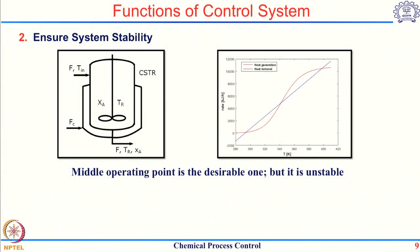An example of such a system is an exothermic CSTR, which you might have studied in your reaction engineering course. In order to maintain the temperature inside the reactor, you have to have some sort of cooling mechanism. If you look at the heat generated inside the reactor, you get a sigmoidal curve as a function of reactor temperature. But if you look at how heat gets removed from the system, it is a linear function of temperature. Wherever these two curves intersect, that is where the rate of generation is equal to the rate of removal of heat.